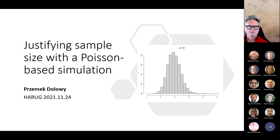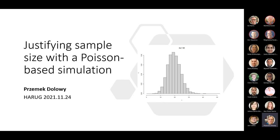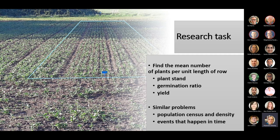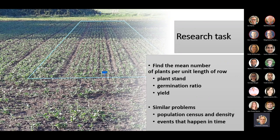When we think that the data have a different distribution, we could use a different distribution for the simulation too. The task the researcher has is to find the mean number of plants per unit length of row on a field. We want to know the plant stand — there are similar problems in ecology, like counting organisms or events that happen in time. We could count all plants, but this is too high a workload, so we have to sample.